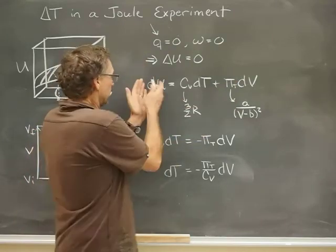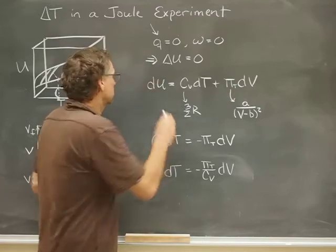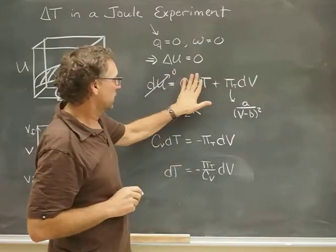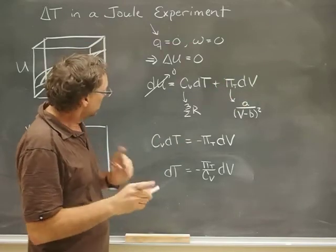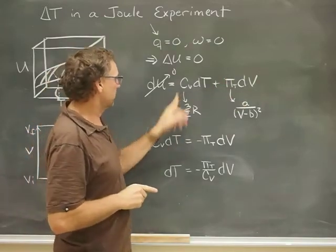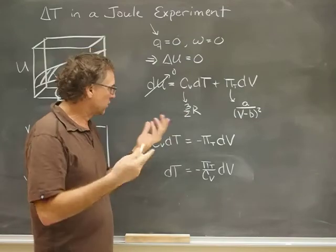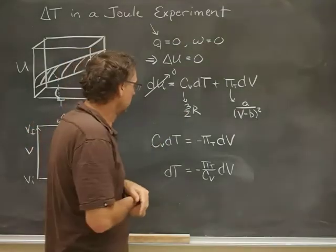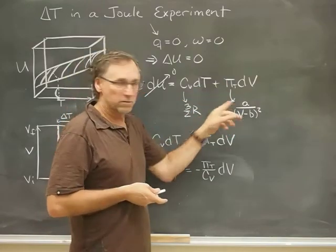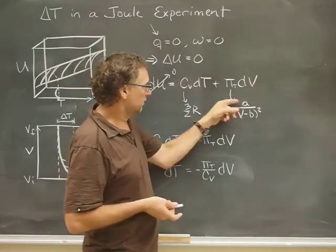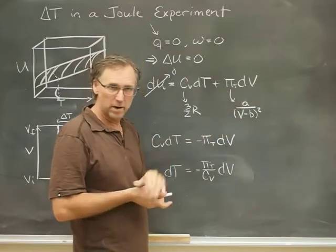And in order for this to be zero every step of the way, then obviously whatever change happens here must be compensated for by the change there. I've also given in the problem that the heat capacity is three halves R, that would correspond to one mole of a monatomic gas. And we're told that this is the formula for πT, that's the van der Waals parameter A divided by V minus B squared, the attractive versus the repulsive part.